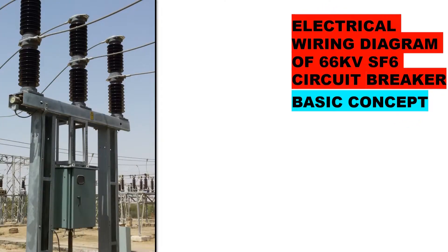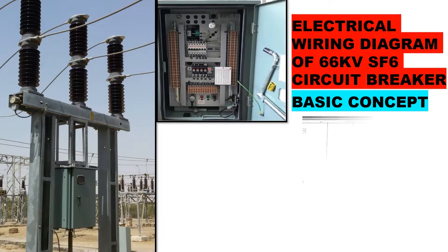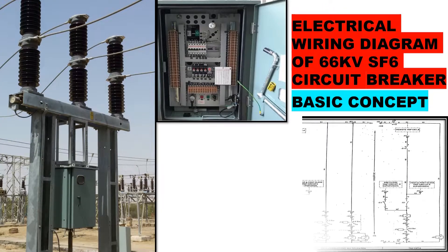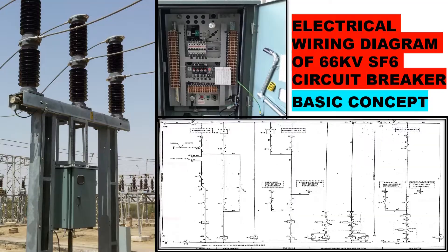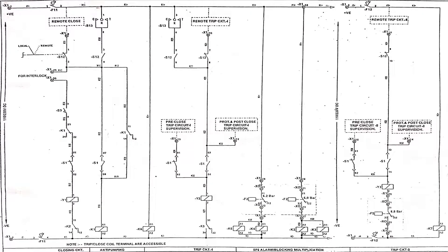Today we will see the electric wiring diagram of a 66 kV circuit breaker — basic concepts. The wiring diagram is shown but it seems complex, so let us simplify it one by one.